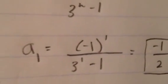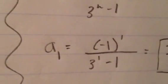The second term given is an equals negative 1 to the n over 3 to the n minus 1. So that would be negative 1 to the 1 over 3 to the 1 minus 1, which would just be negative 1 half.